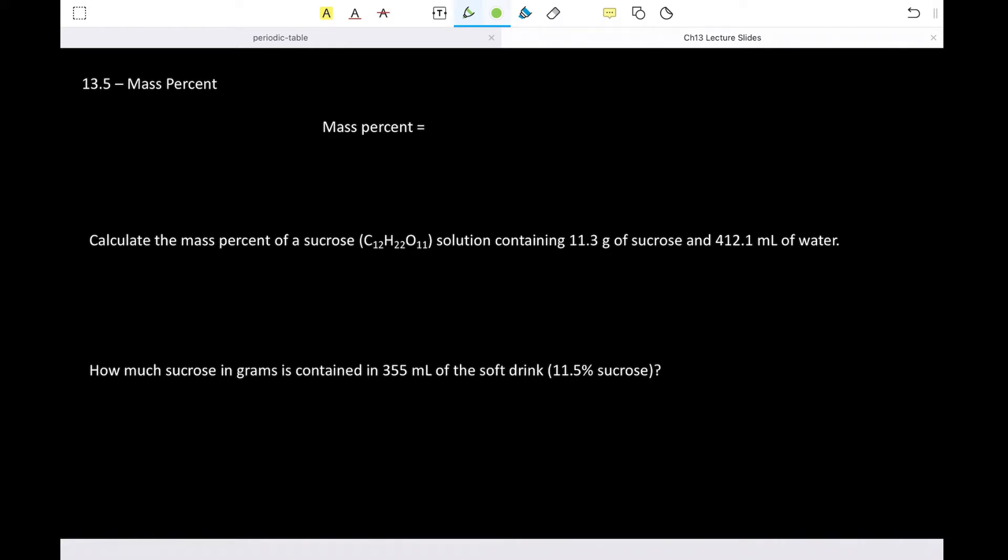So mass percent, the most common way to report this is the mass of solute over the mass of the total. So this would be mass total, which would be the solute mass plus the mass of the solvent. However much was used there. And do be mindful that that is the total mass, always going to be the total mass.